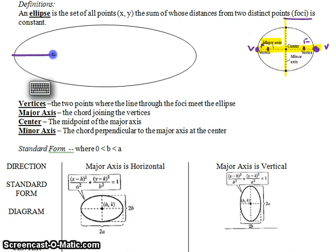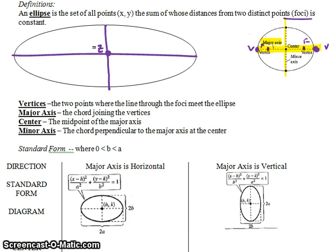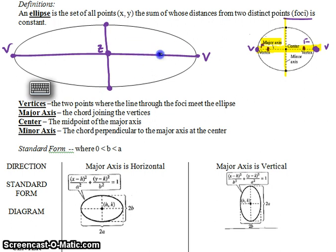I'm going to zoom in and make a larger picture and label those things. You have the center, which I'm labeling with a Z — only because C for center is used for something else. You have the two vertices on the outside, the endpoints of the minor axis, and then the foci, which lie on the major axis line that goes through the center.